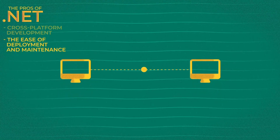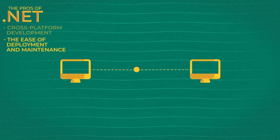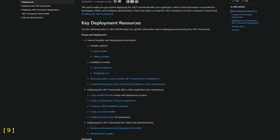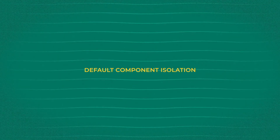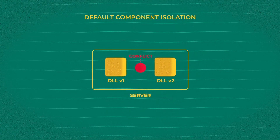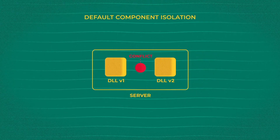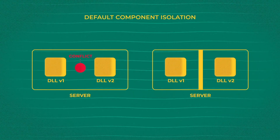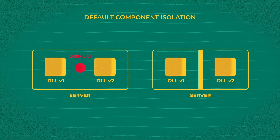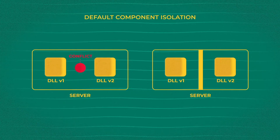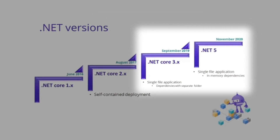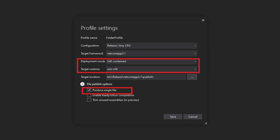Deployment happens when the application goes into production. The easier it is to deploy, the better for the whole team. .NET includes a number of basic features that will simplify deployment. For example, .NET has a default component isolation. This feature can be used to avoid conflicts between different versions of DLL, or dynamic link libraries. Whenever a different version of DLL is deployed, the application may break because of the library conflict. Component isolation helps avoid application failures by separating newly deployed pieces of code. Since .NET Core 3.0, the framework supports single file applications, meaning all the files and dependencies are packed into a single file that also supports easy deployments.